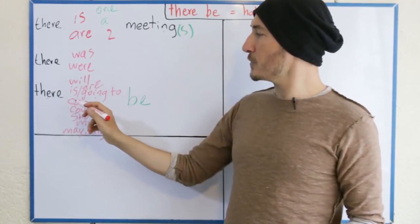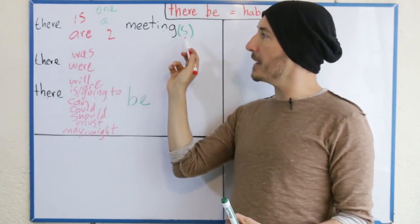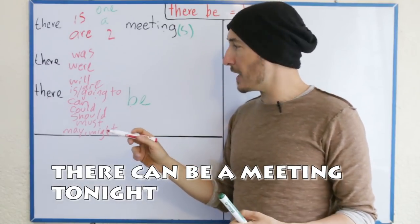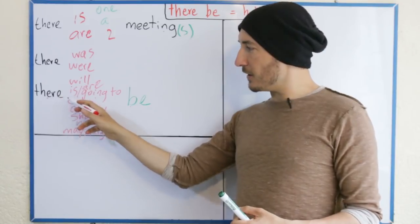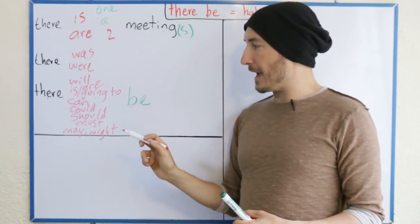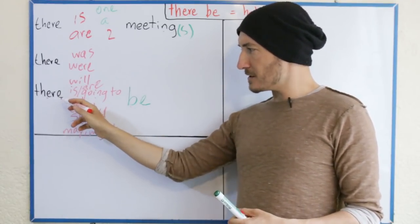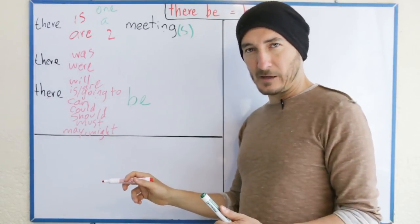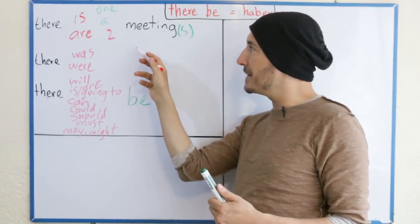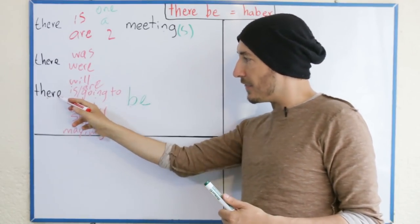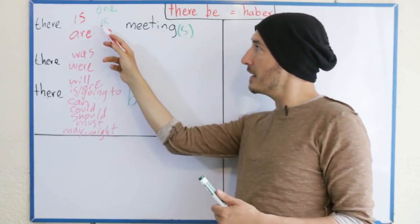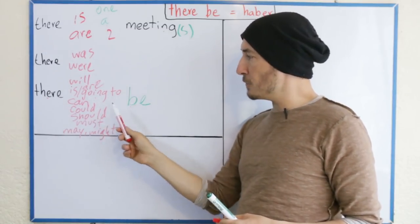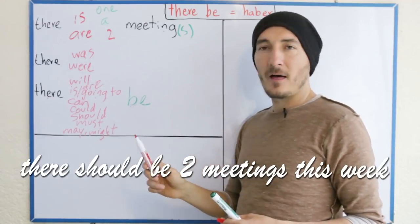Puede que haya una reunión esta noche — there can be a meeting tonight. Puede que haya dos reuniones esta noche — there can be two meetings tonight. Podría haber dos reuniones — there could be two meetings. Podría haber una reunión — there could be a meeting. Debería haber una reunión esta noche — there should be a meeting tonight. Debería haber dos reuniones esta semana — there should be two meetings this week.